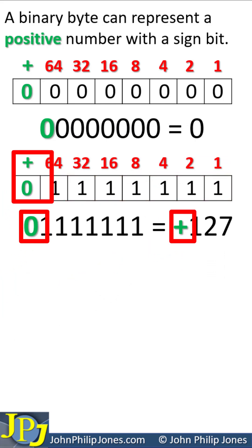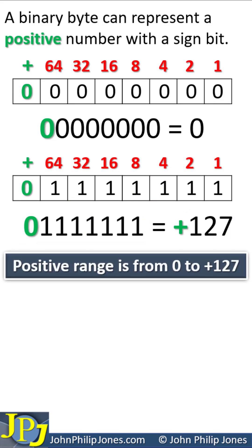So we have plus 127. So the range of numbers that can be represented is from 0 to plus 127.